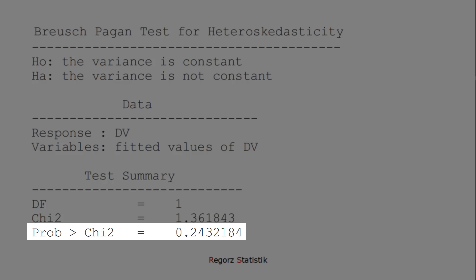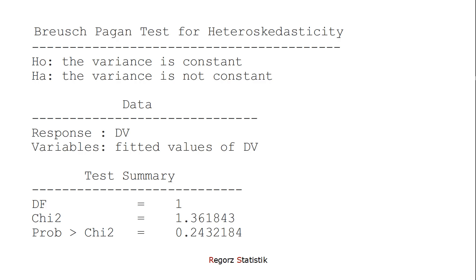If we had a significant p-value, there would be a violation of the homoscedasticity assumption. In that case, we could use, for example, robust standard errors, or we could use bootstrapping.